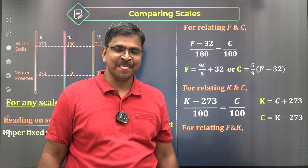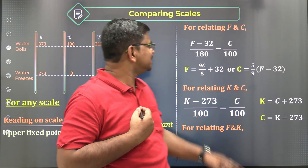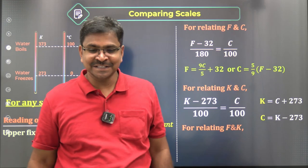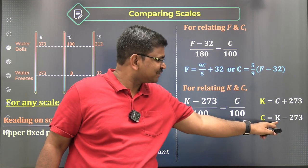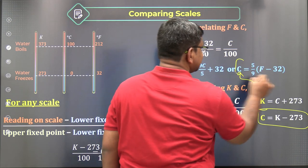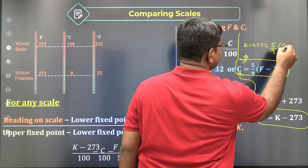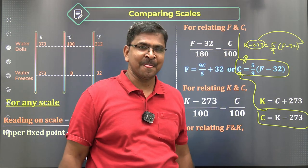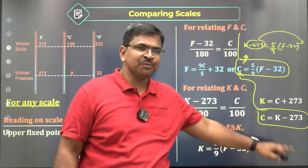For the relation between Fahrenheit and Kelvin: I already know K = C + 273, so C = K minus 273. I also know F = (9C / 5) + 32, or equivalently C = (5 / 9)(F minus 32). Substituting C = K minus 273 into the second equation: K minus 273 = (5 / 9)(F minus 32). Taking minus 273 to the right side: K = (5 / 9)(F minus 32) + 273.